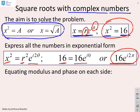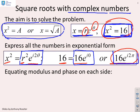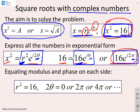Next, we equate the modulus and phase on each side. We're trying to solve x squared equals 16. We've said x squared equals r squared e to the i two theta, and 16 equals 16 e to the i zero, or 16 e to the i two pi. Looking at the moduli: on one side it's r squared, on the other it's 16. The phase on one side is two theta; on the other it's zero or two pi. So we find r squared equals 16, and equating the phases gives two theta equals zero, or two theta equals two pi, or two theta equals four pi, and so on.